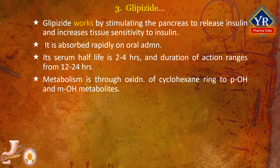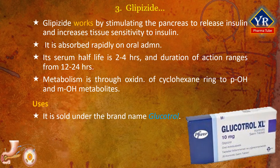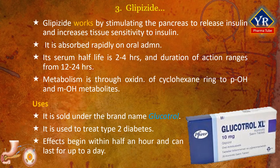Indications for use and the mechanism of action are similar to those of gliburide. Glipizide is sold under the brand name Glucotrol. It is an anti-diabetic medication of the sulfonylurea class used to treat type 2 diabetes. It is used together with a diabetic diet and exercise. It is not indicated for use by itself in type 1 diabetes. It is taken by mouth, with effects generally beginning within half an hour and lasting up to a day.